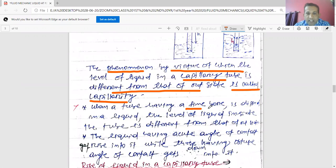When a tube having a fine bore—fine bore means a hole but it is lengthwise, like a bore well—is dipped in a liquid, the level of liquid inside the tube is different from that of outside.